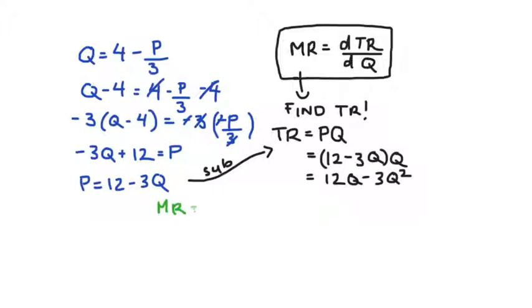Well, our rule is that the marginal revenue is equal to the derivative of our total revenue with respect to quantity, which is equal to, just using the power rule, 12 minus 6Q.